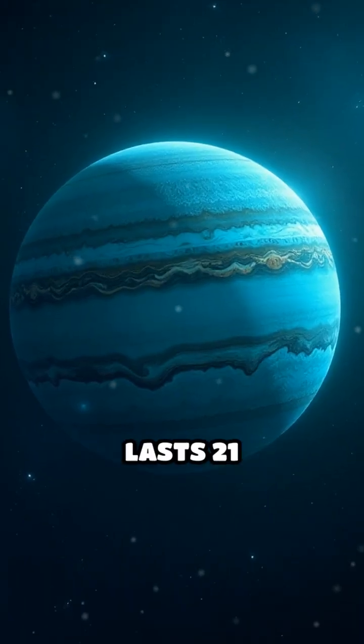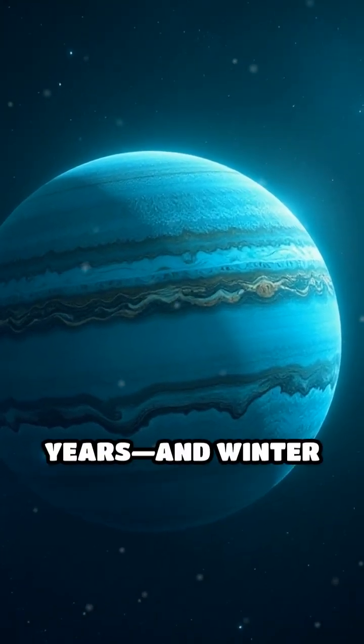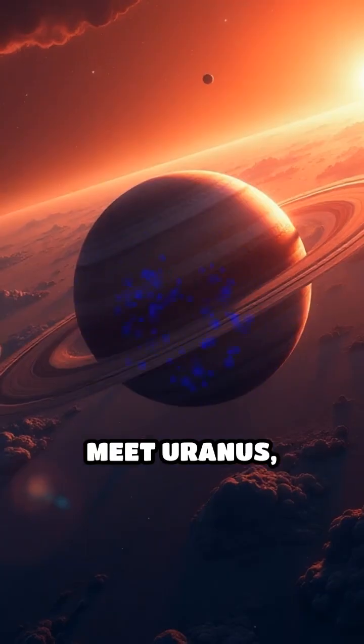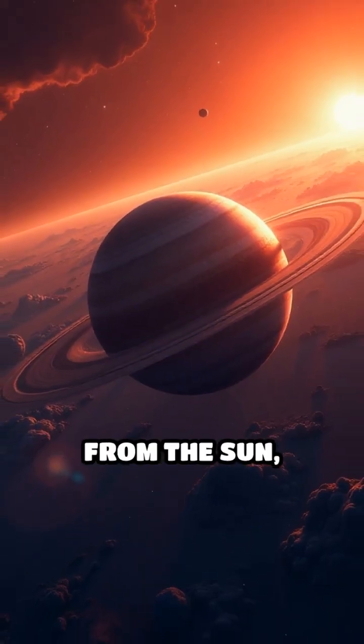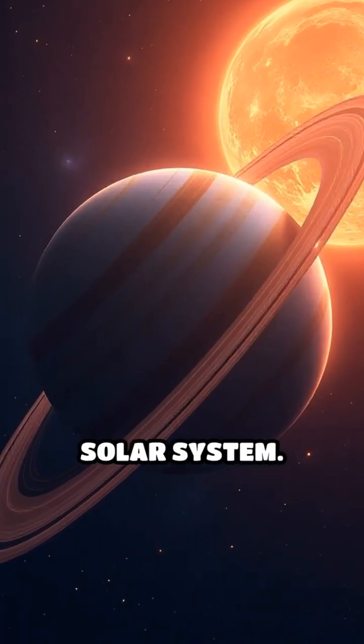What if I told you there's a planet where summer lasts 21 years and winter just as long? Meet Uranus, the seventh planet from the sun, home to some of the most bizarre weather in the solar system.